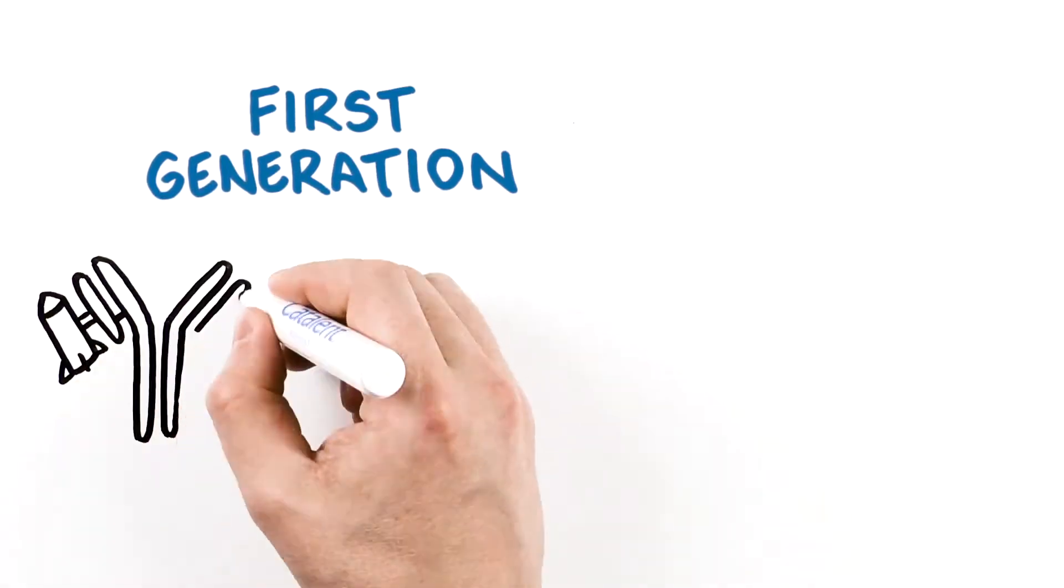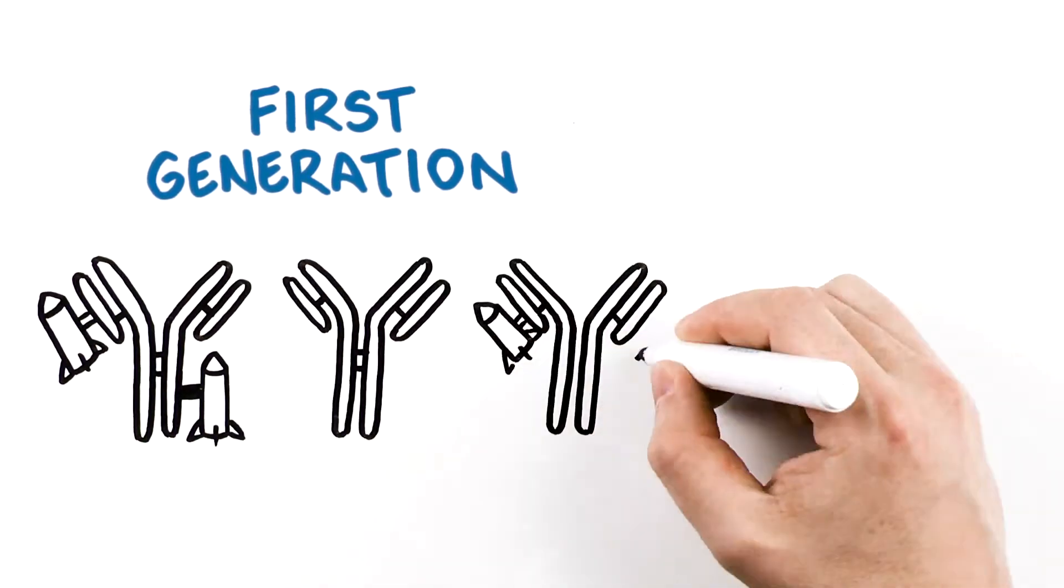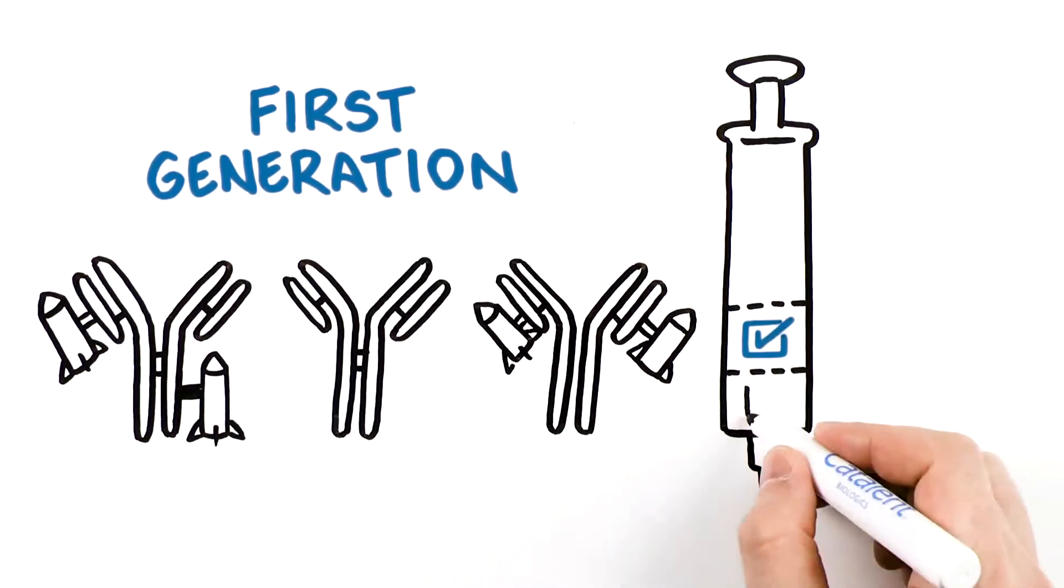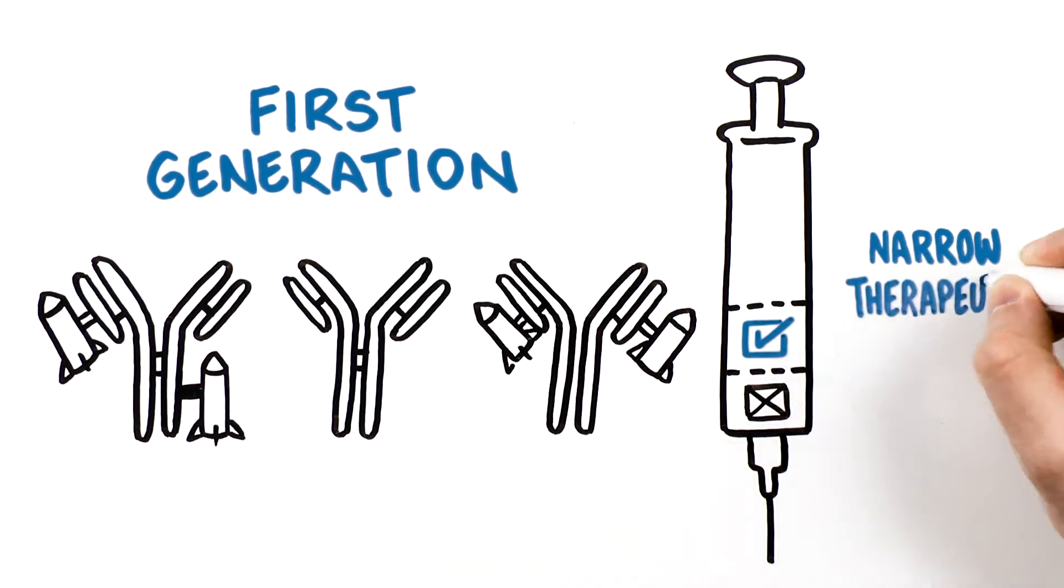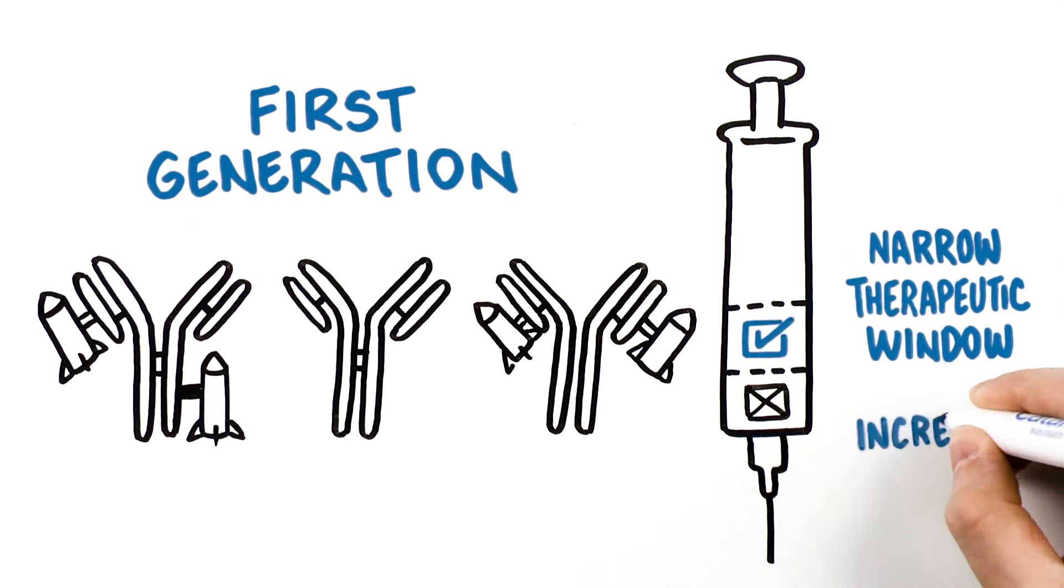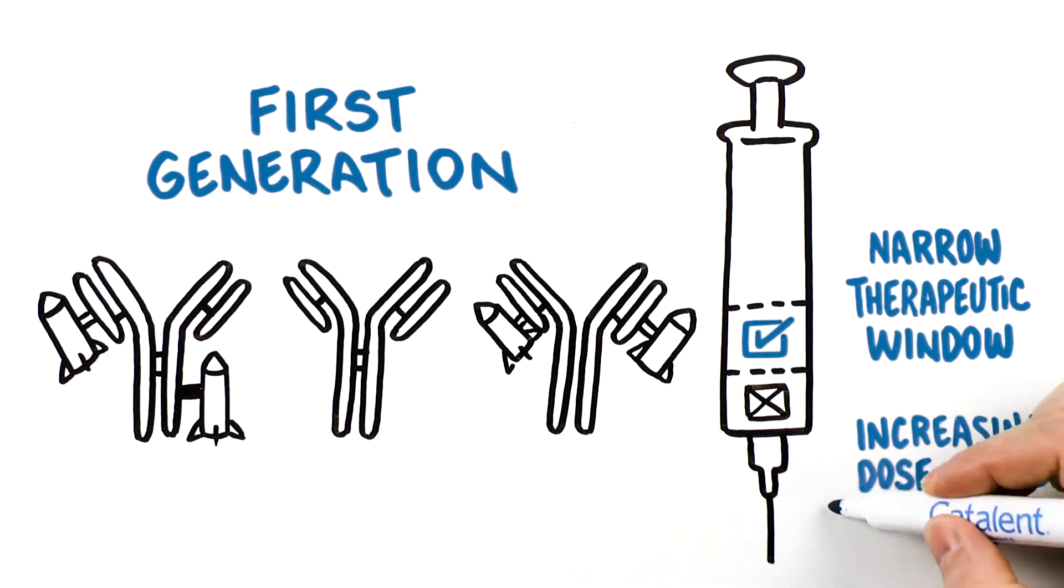Yet most first-generation ADCs, which were heterogeneous mixtures of over- and under-conjugated antibodies, failed in the clinic because of a narrow therapeutic window. Dosing levels became toxic at the same time or before anti-tumor activity was seen.